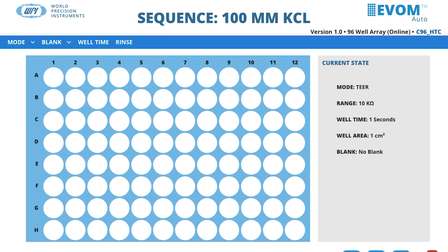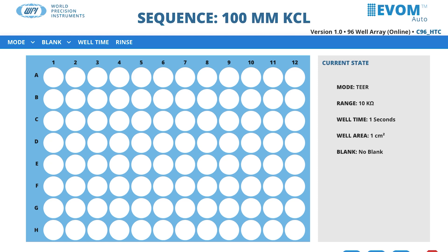Select your Blank option. This option measures the resistance of the first column — wells A1, B1, C1 to H1 — and this value is used as a baseline for each row. Each value on the blank value table measures the resistance of the specific electrode pair used to measure each column on a well containing only buffer. These values, values 1 through value 8, are subtracted from the measurements on the corresponding row to obtain the change from the baseline well.